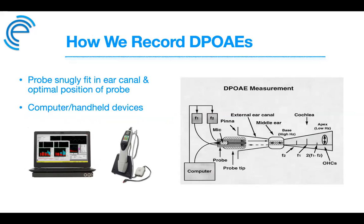To record OAEs, a probe is fitted snugly into the ear canal. The stimulus generated by the loudspeaker in the probe assembly causes the tympanic membrane to vibrate; these vibrations are transmitted through the middle ear ossicles and oval window to the cochlea, creating a traveling wave in the cochlear fluid and along the basilar membrane. In a healthy cochlea, the outer hair cells cause contraction and expansion, eliciting both an afferent signal to the auditory nerve and an efferent signal that travels back through the middle ear to be detected as an OAE by the microphone.